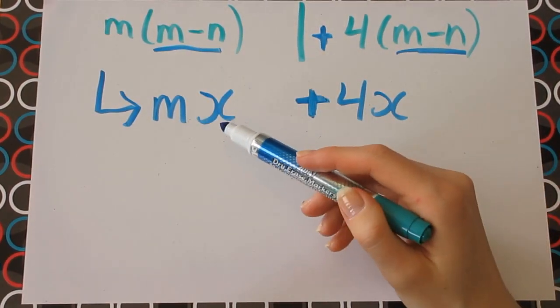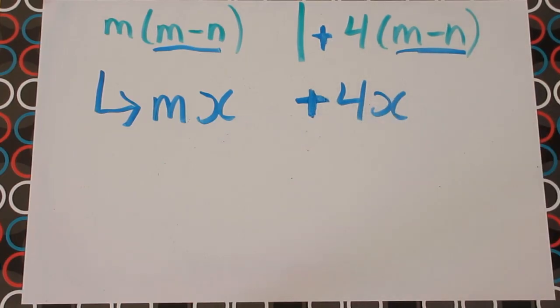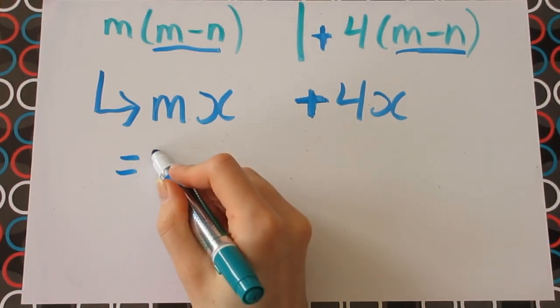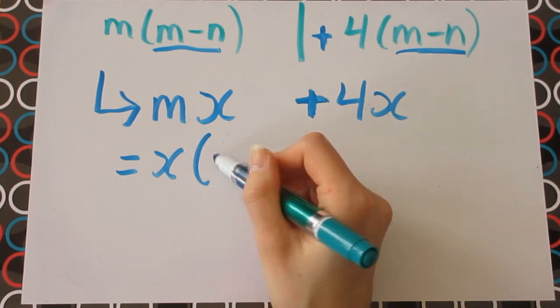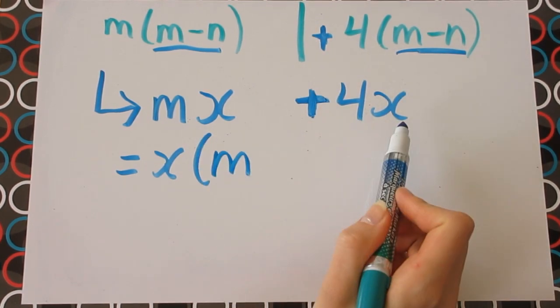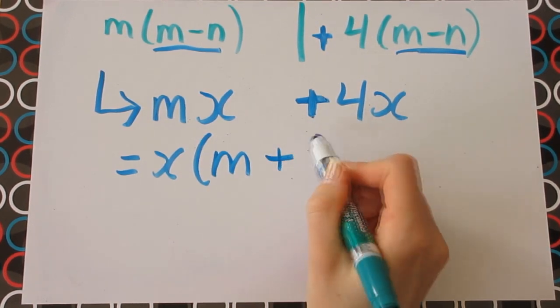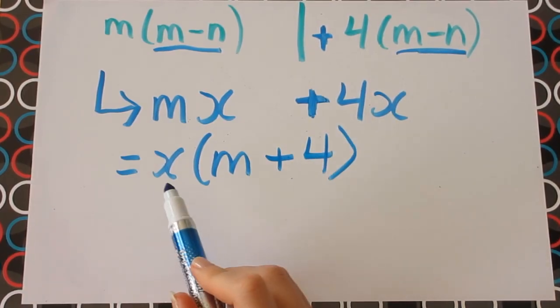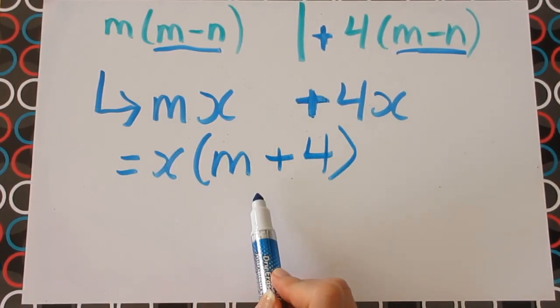From here, you can see that x is the only common factor between both terms. And if we factor out the x, mx divided by x is just m, and 4x divided by x is just positive 4. So that's x multiplied by m plus 4.